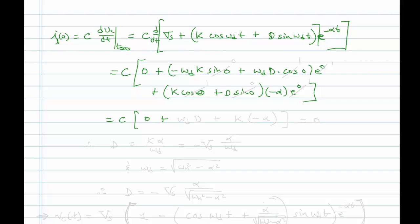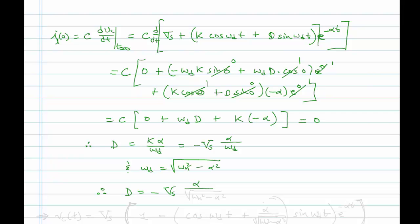Collecting terms: C·(omega_D·D + K·(-alpha)) = 0, so omega_D·D - K·alpha = 0. Solving for D: D = K·alpha / omega_D. Since K = -V_S, we get D = -V_S·alpha / omega_D, which is -V_S·alpha / sqrt(omega_N squared minus alpha squared).